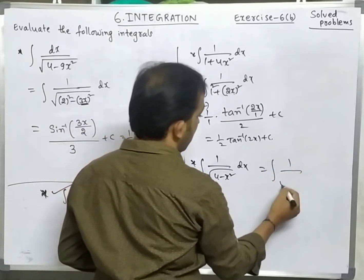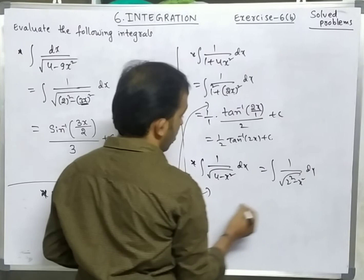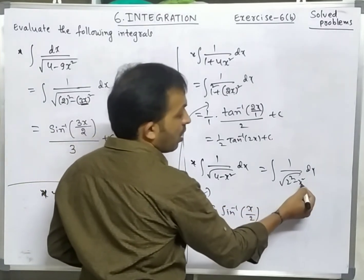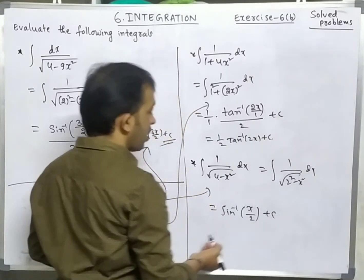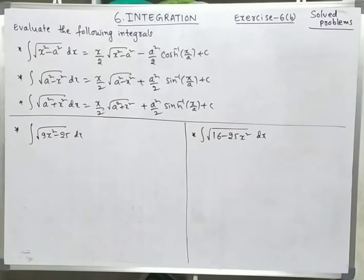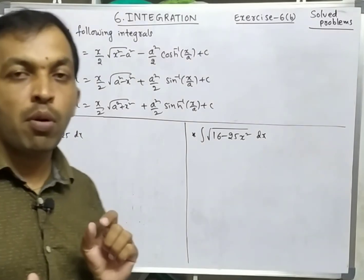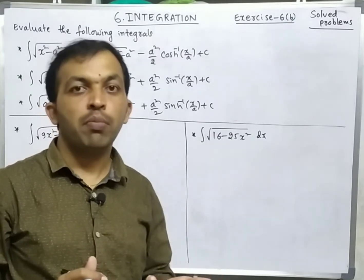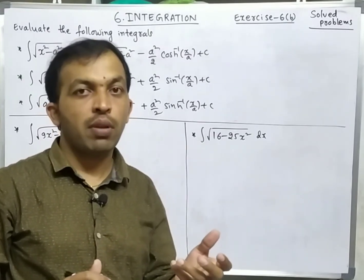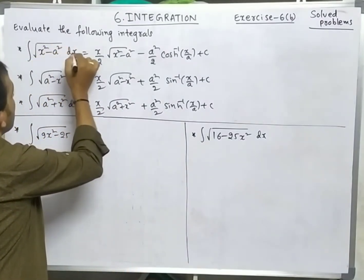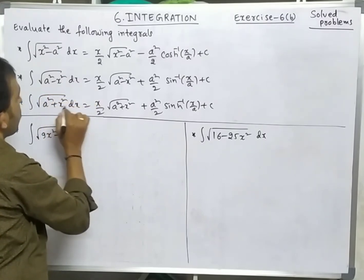Next problem: 1/√(2²-x²). Direct formula: sin⁻¹(x/a) = sin⁻¹(x/2). The coefficient of x is 1, so no need to write 1 in the denominator. Students, these are 3 important formulas I explained in previous videos: integration of √(x²-a²), √(a²-x²), and √(a²+x²) dx. Remember all three.